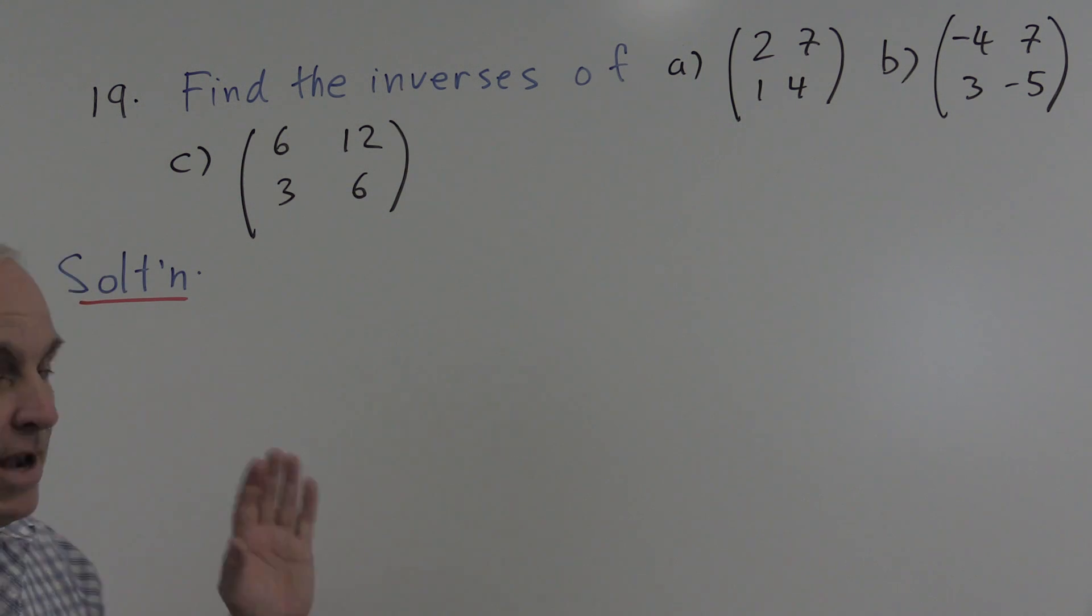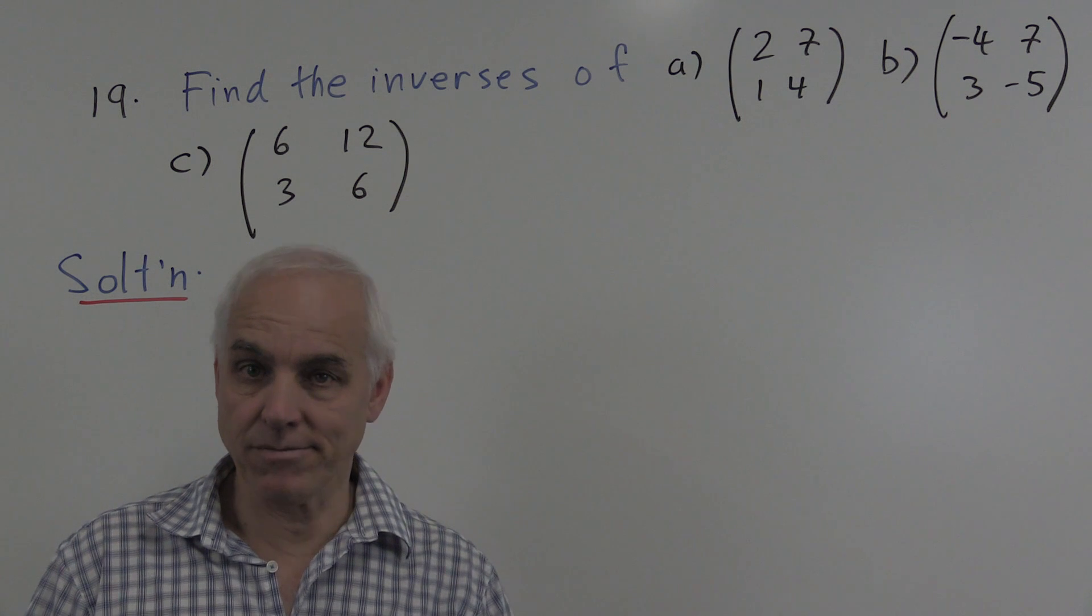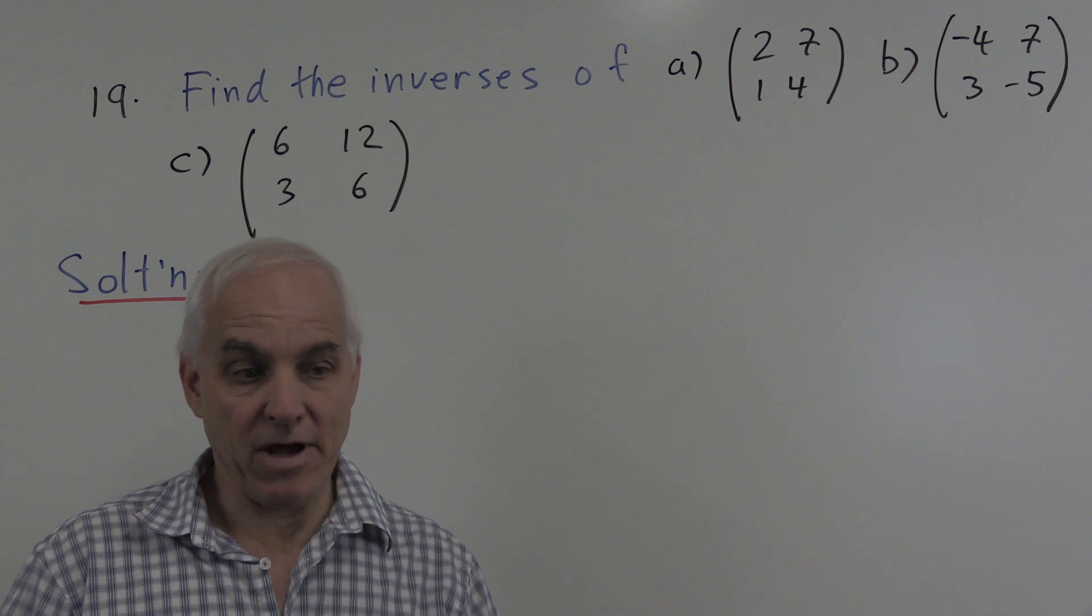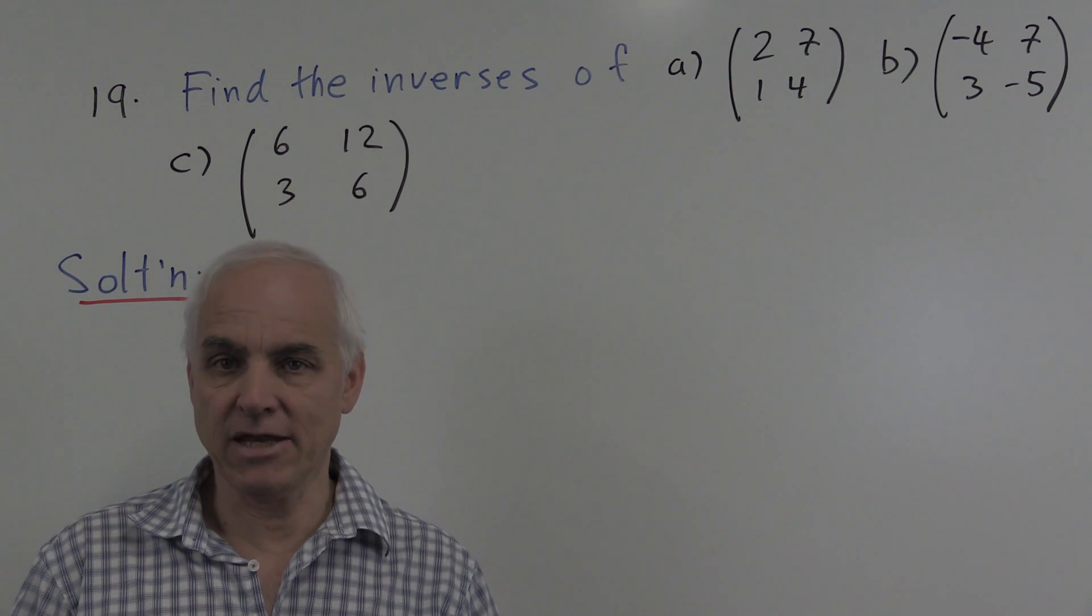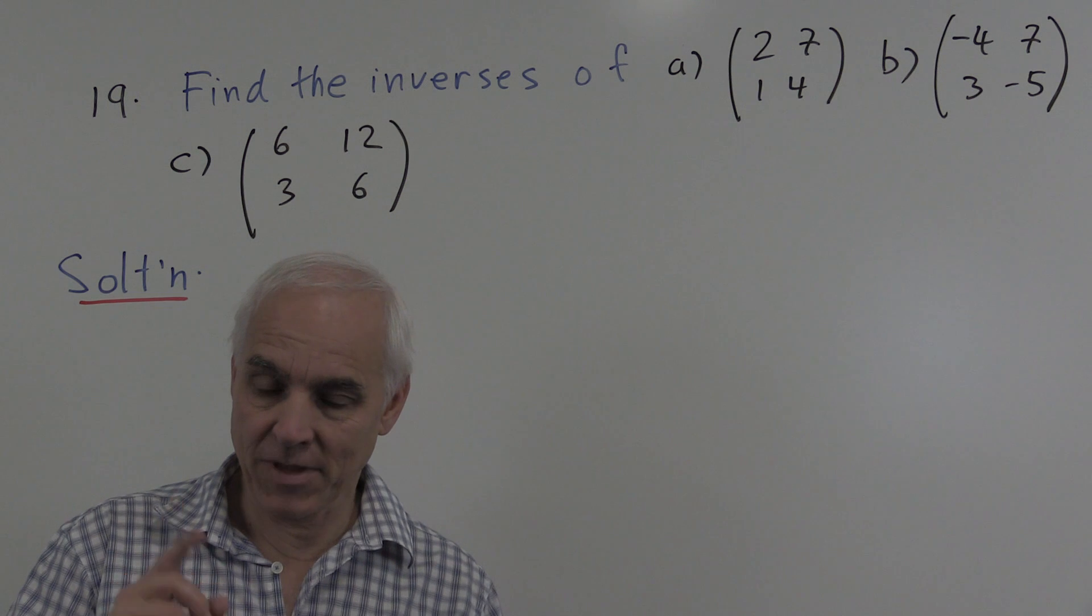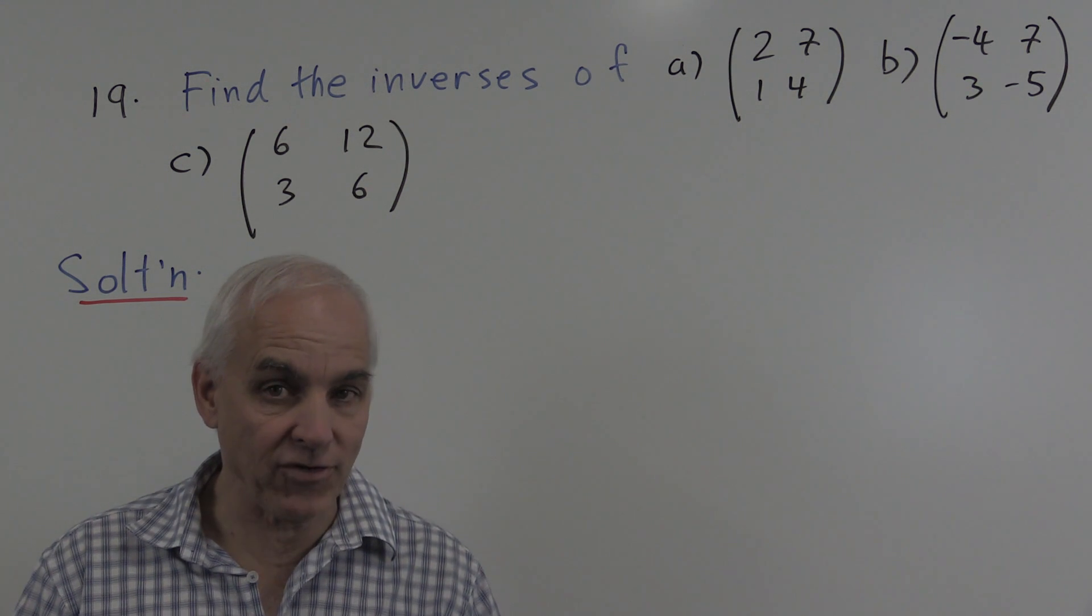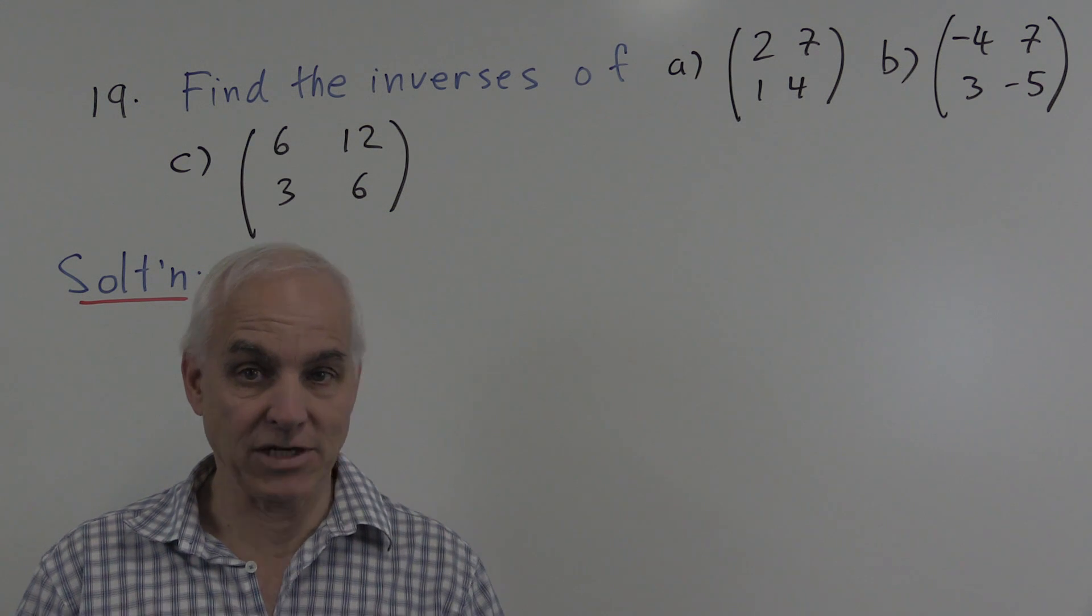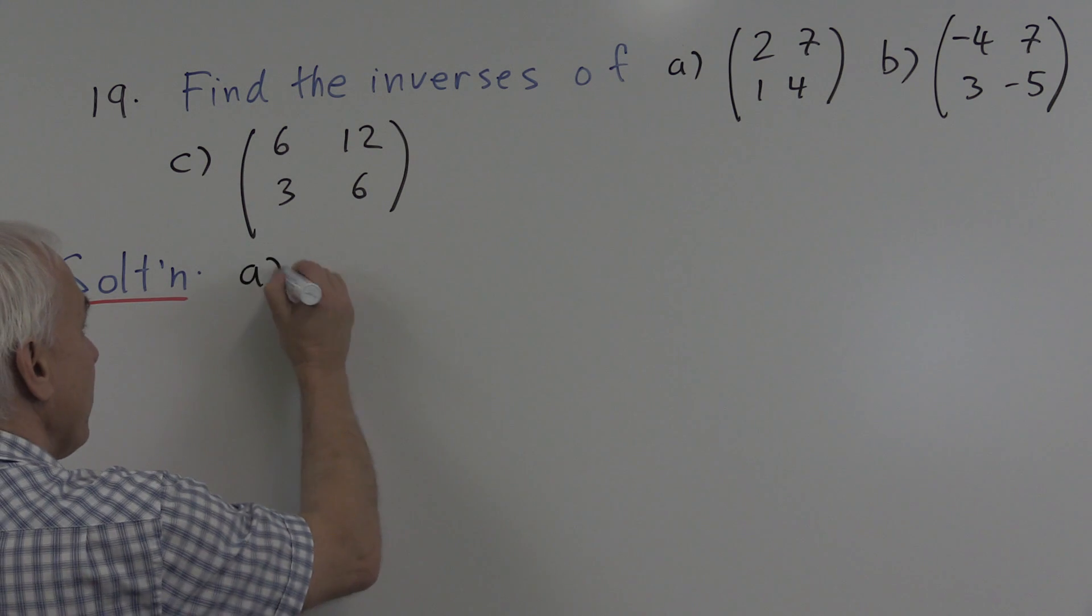For a general n by n matrix, it's actually computationally reasonably involved. But for a two by two matrix, there's a relatively easy way of finding the inverse when it exists. But we have to remember that the inverse of a matrix doesn't always exist. It depends on the determinant of the matrix. So let's have a look at the three matrices here.